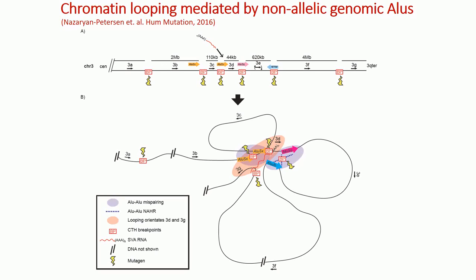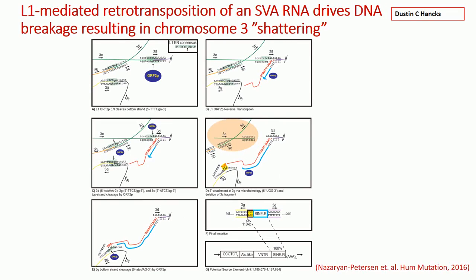Therefore, we suggest that chromatin looping, which is shown in this figure, mediated by homologous Alu elements, may have brought distal DNA regions into close proximity, facilitating DNA cleavage by catalytically active L1 endonuclease. We propose a model, the details of which are presented in this figure.